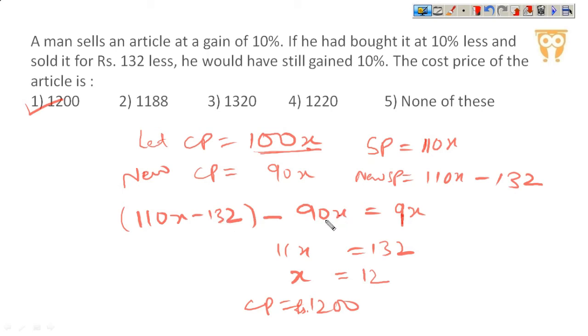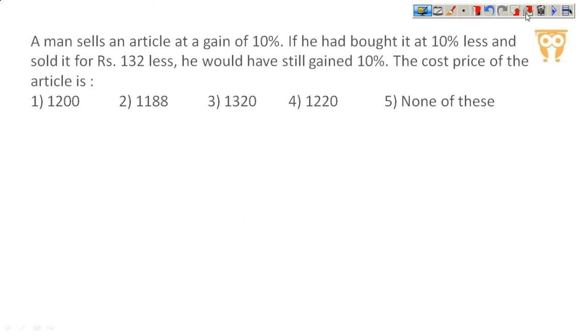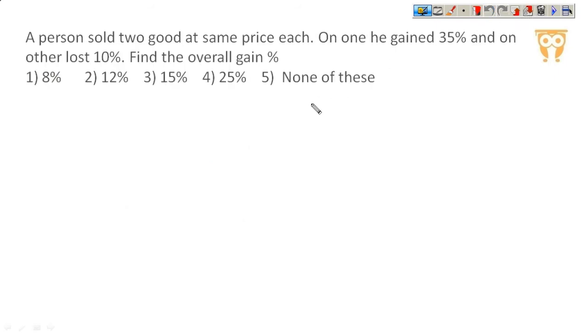SP minus CP is profit. Profit divided by CP would be 10% given. So this is how we have solved the question. Let's see the next question. Again, this is not the standard type.